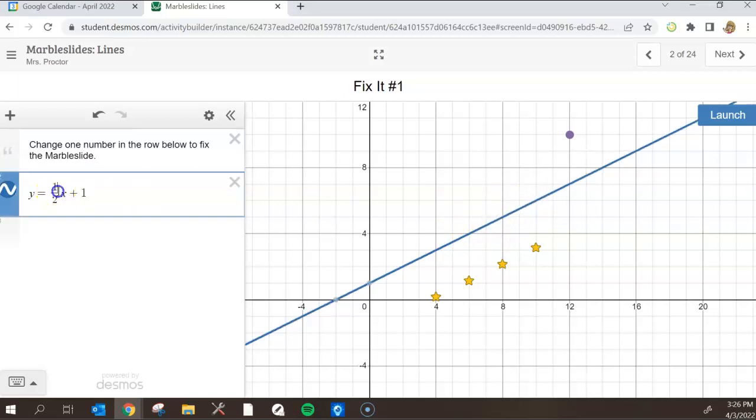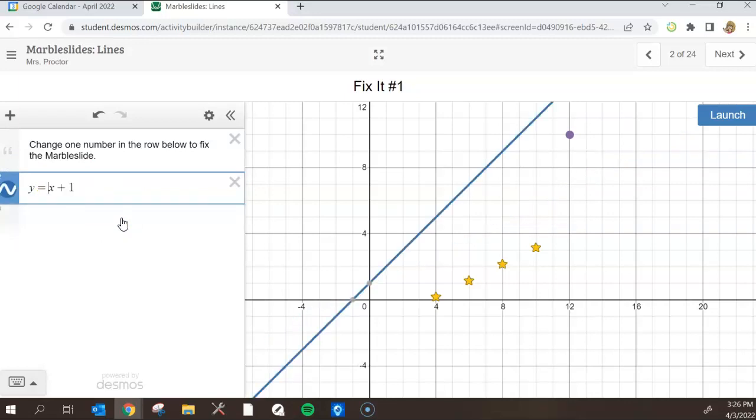So what happens if we change that to just instead of a fraction, what if it's just two? Notice two is the same as two over one, so that's a rise of two, run of one, rise of two, run of one, etc.